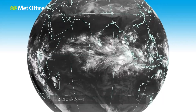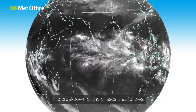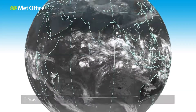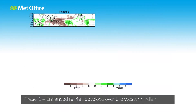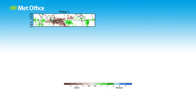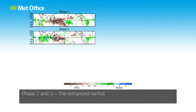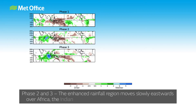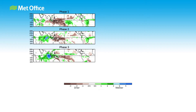The breakdown of the phases is as follows. Phase 1: enhanced rainfall develops over the western Indian Ocean. Phases 2 and 3: the enhanced rainfall region moves slowly eastwards over Africa, the Indian Ocean, and parts of the Indian subcontinent.